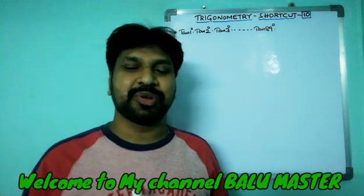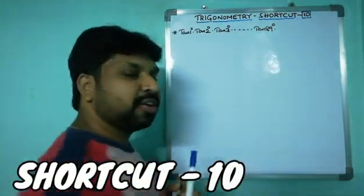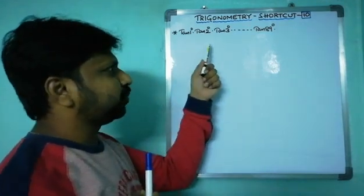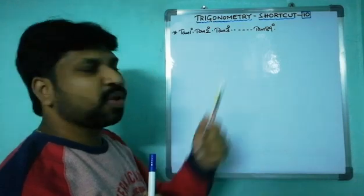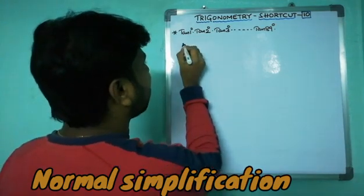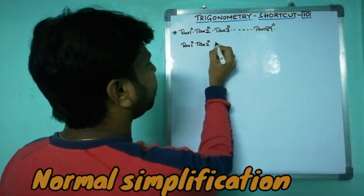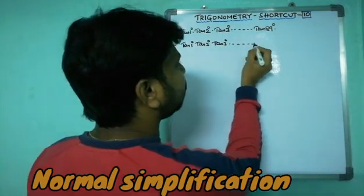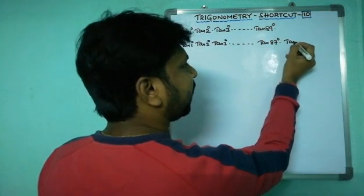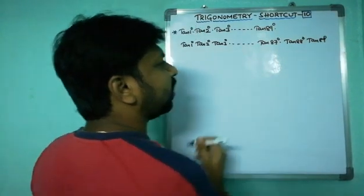Hi friends, good morning, welcome to my channel Balu Master. Today I'm going to discuss shortcut number 10: trigonometry. This is a well-known question that everyone knows: tan 1° × tan 2° × tan 3° × ... × tan 89°. Whenever this kind of question appears, generally you solve it by writing tan 1° × tan 2° × tan 3° and continuing to tan 87° × tan 88° × tan 89°.